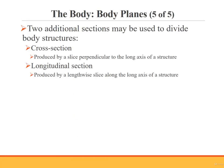The cross section and longitudinal section are additional ways of dividing the body, often used to describe internal views of structures. A cross section is produced by a slice perpendicular to the long axis of a structure — in other words, a plane that is horizontal to the floor. A longitudinal section is produced by a lengthwise slice along the long axis of a structure.